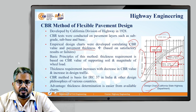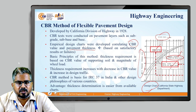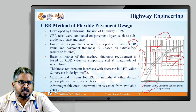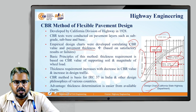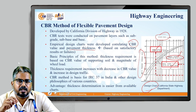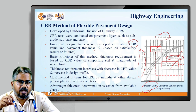These empirical design charts were developed providing a relationship between the CBR value and the pavement thickness, based on satisfactory results or failures. The basic principle of this method is that the thickness requirement is based on the CBR value for the supporting soil, and must be increased based on decreasing CBR value and increasing design traffic.